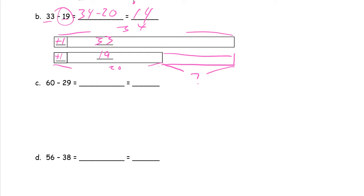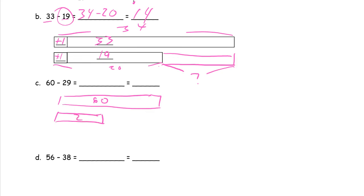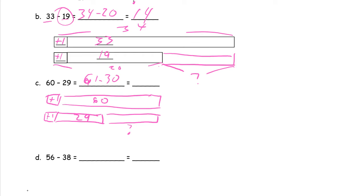Now we have to draw our own tape diagram — starting with sixty and twenty-nine. We want to find the difference between the two. Twenty-nine is a difficult subtrahend, so I'm going to add one to it and make it a thirty. I have to add the same amount to both numbers — adding one to both — because I needed one to get twenty-nine up to thirty. So now I have sixty-one minus thirty, which is thirty-one.